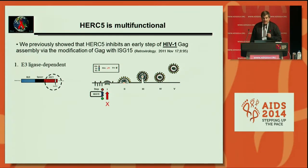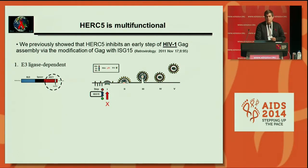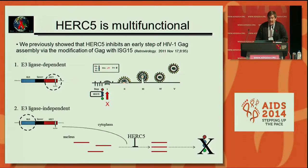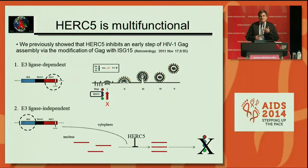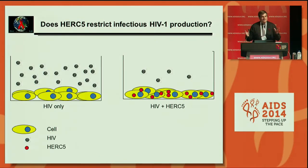We previously published a paper showing that HERC5 can inhibit an early step of HIV type 1 GAG assembly by modifying the GAG polyprotein with ISG15. Using electron microscopy, we saw an arrest at an early stage of budding — an E3 ligase-dependent mechanism. Today I'll be talking about an E3 ligase-independent mechanism of restriction caused by the RLD domain, which we've shown actually restricts the export of viral mRNA.